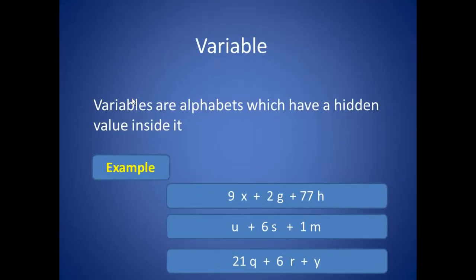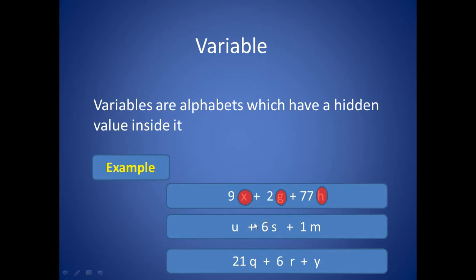Variables are alphabets which have a hidden value inside them. For example, in this expression, x is a variable, g is a variable and h is a variable. And in this expression, u is a variable, s is a variable and m is a variable.